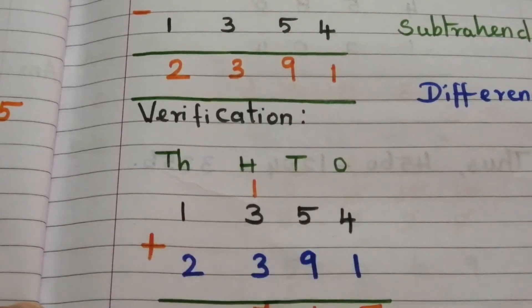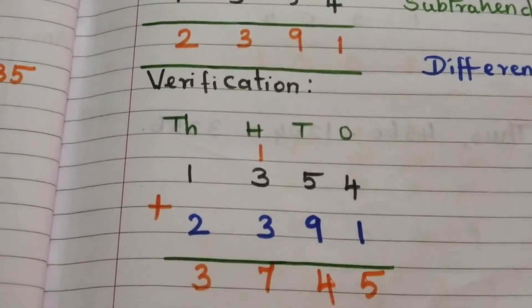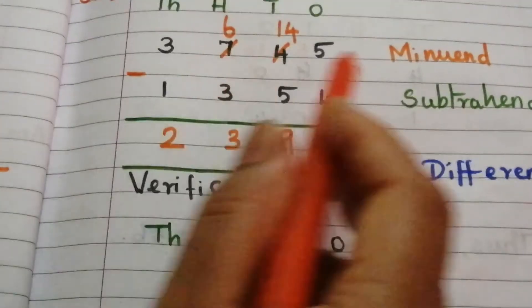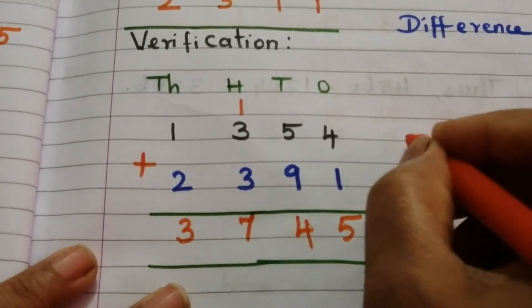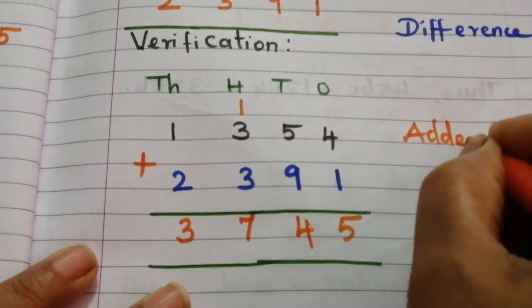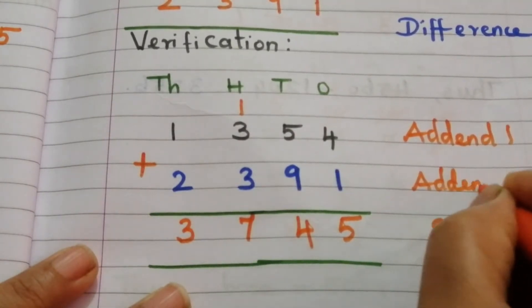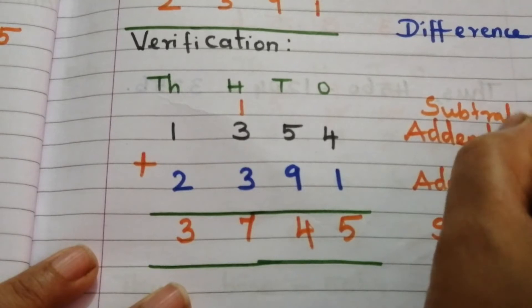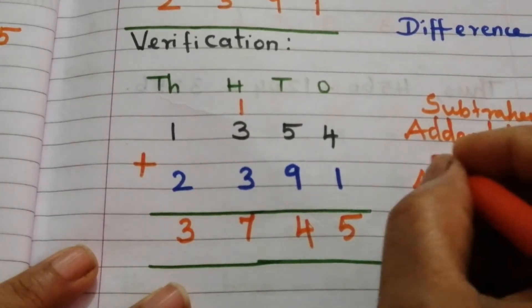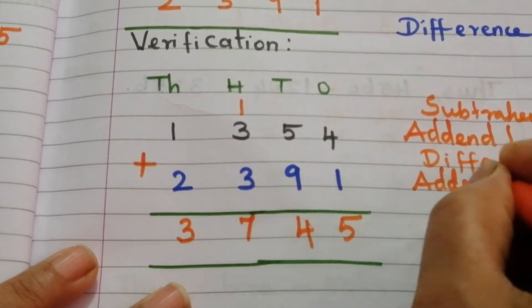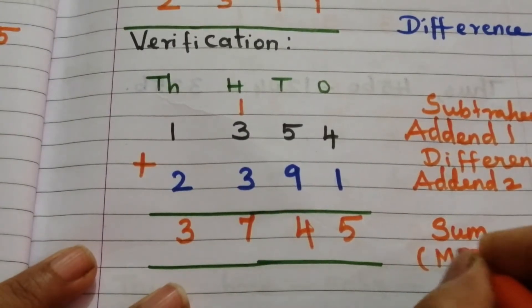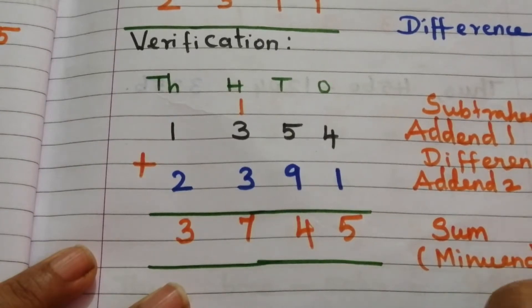3 plus 3 is 6, plus 1 carry is 7. 2 plus 1 is 3. So our answer is 3745. This is equivalent to the minuend 3745. This is the sum, this is addend 1, this is addend 2. Addend 1 is equivalent to the subtrahend, and addend 2 is equivalent to the difference. So the sum is equivalent to the minuend.